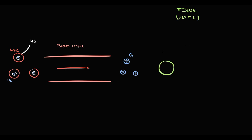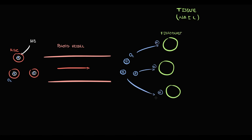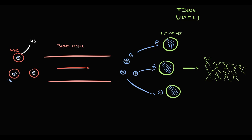In the nail tissue we have fibroblasts. For their metabolism, fibroblasts require oxygen, and the function of fibroblasts is to produce collagen. In fact, fibroblasts produce a lot of collagen. To produce collagen, fibroblasts need a lot of iron, because iron is a cofactor for collagen production. Deposition of collagen molecules forms the structure of our nails.